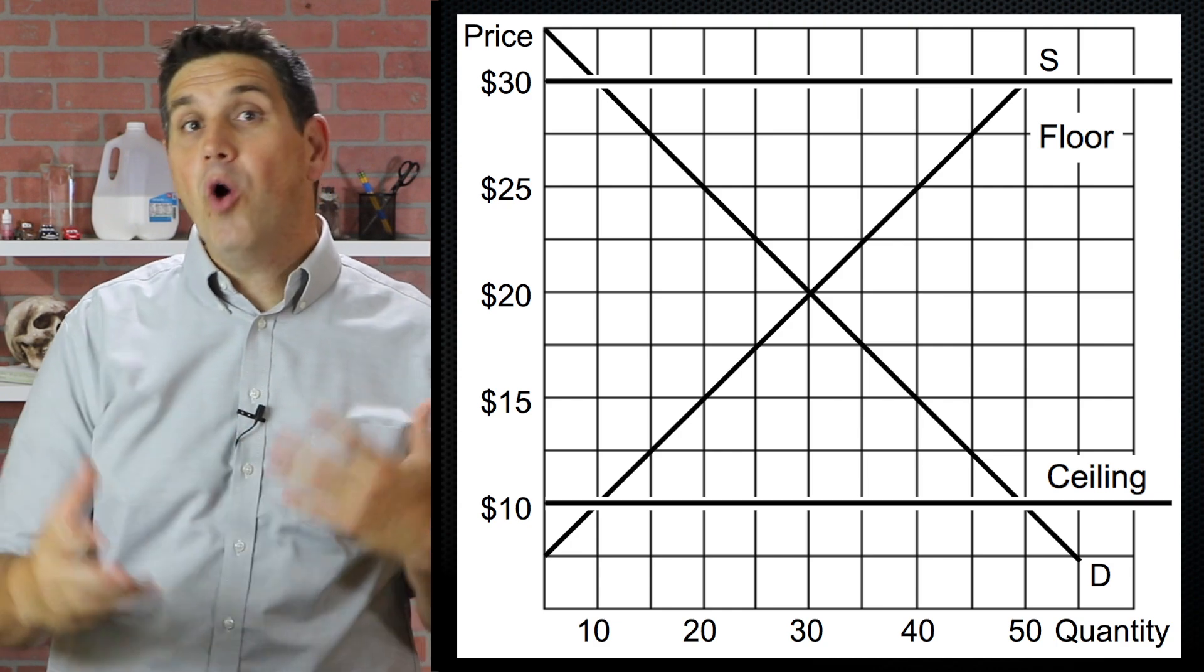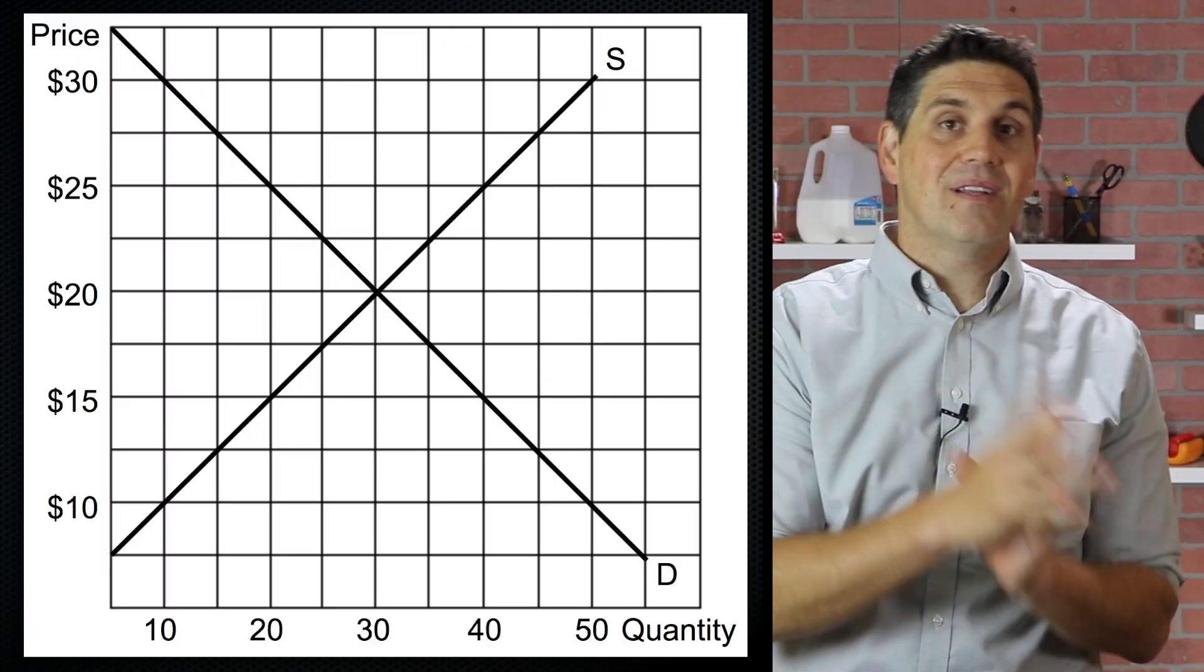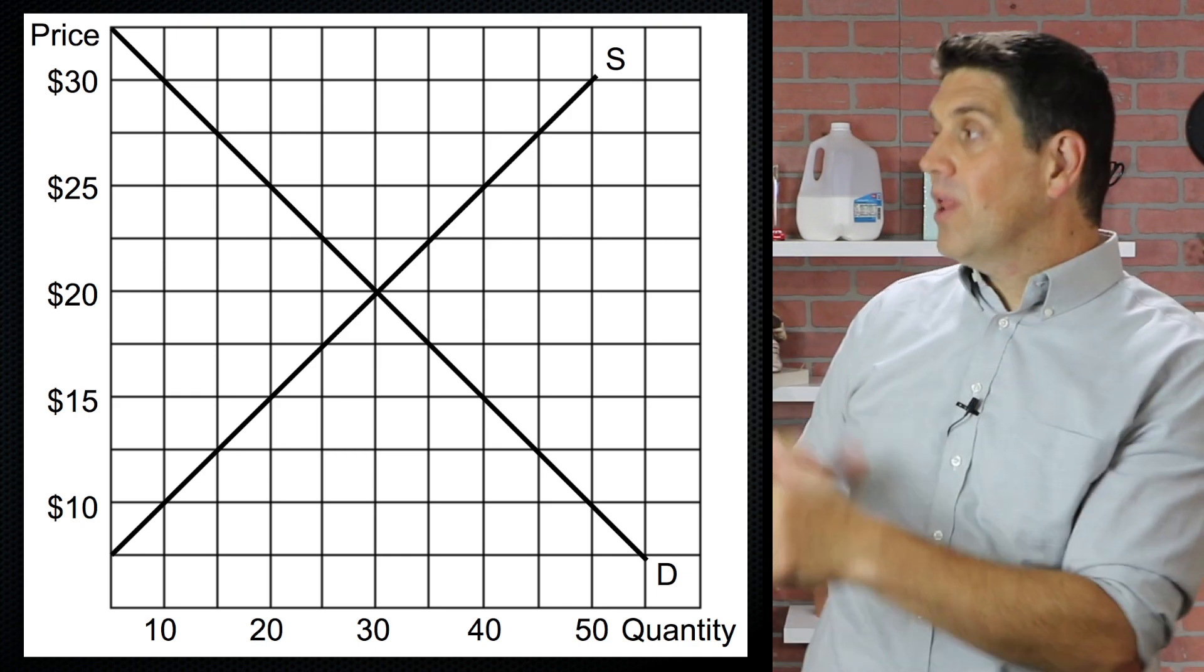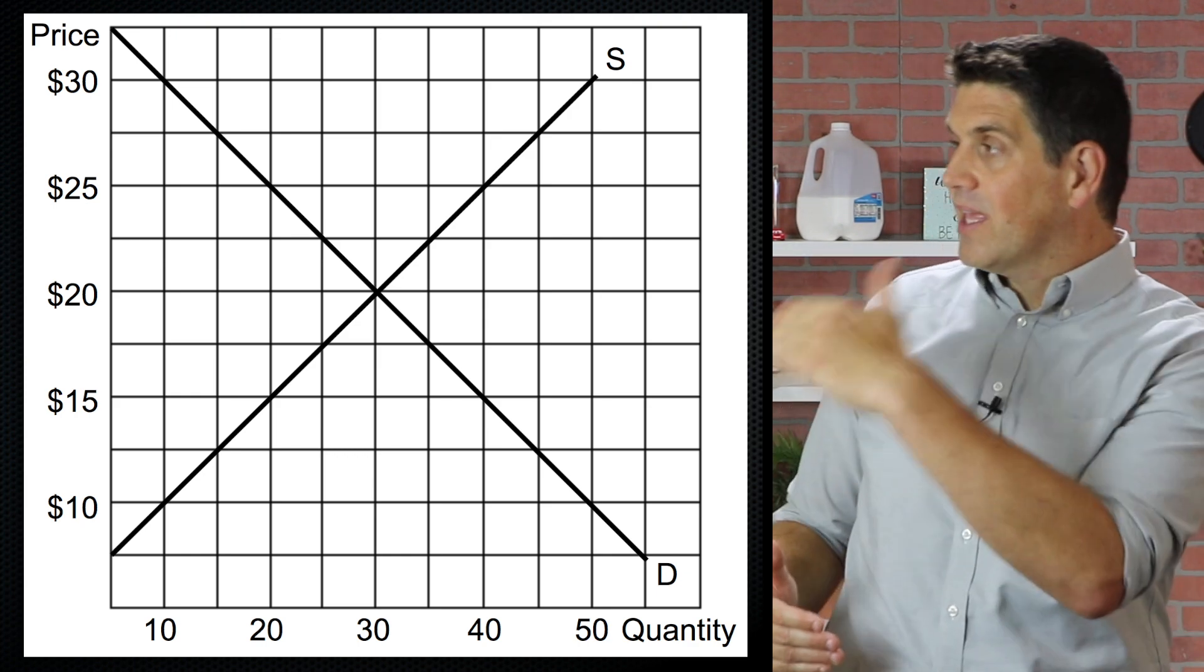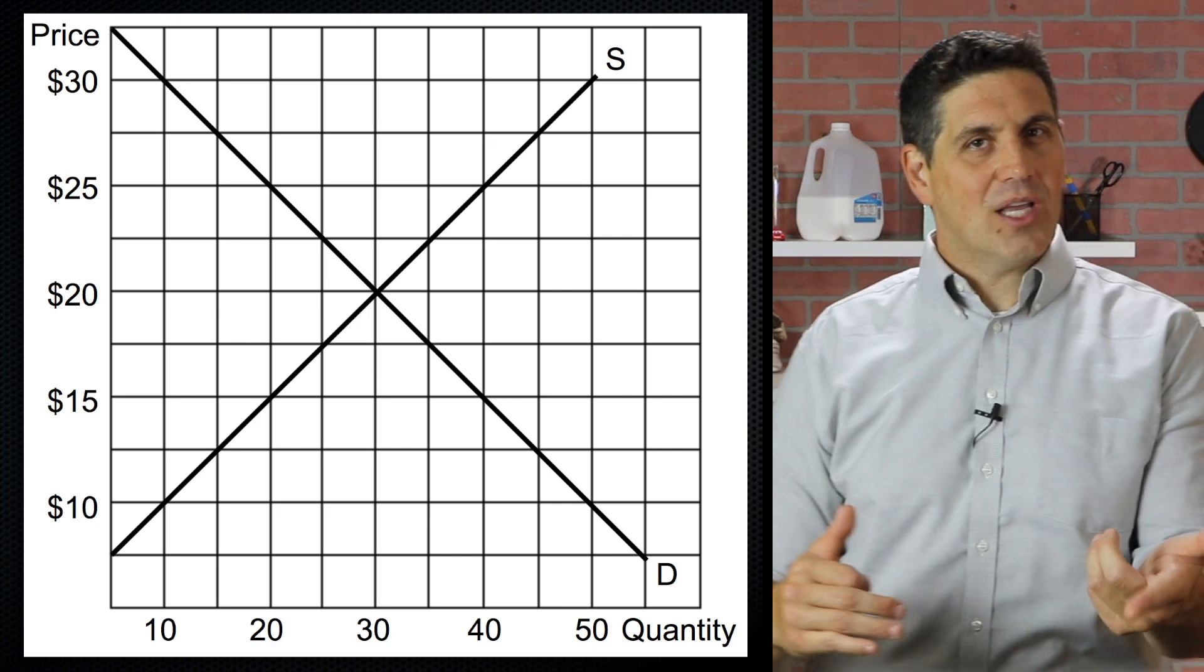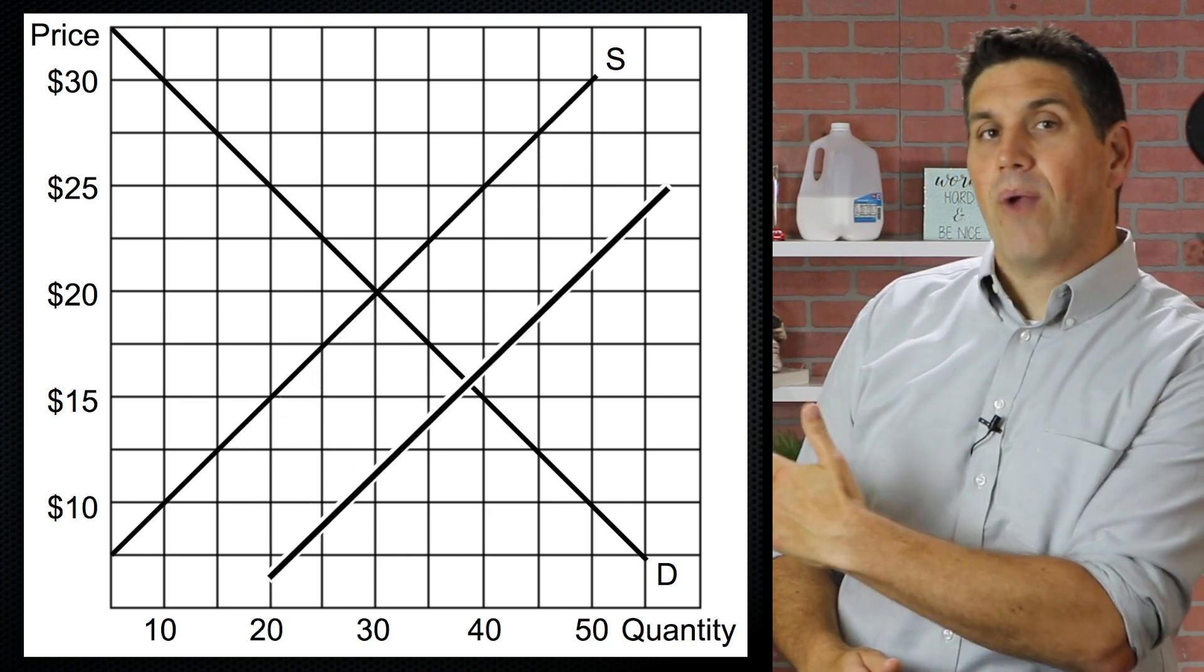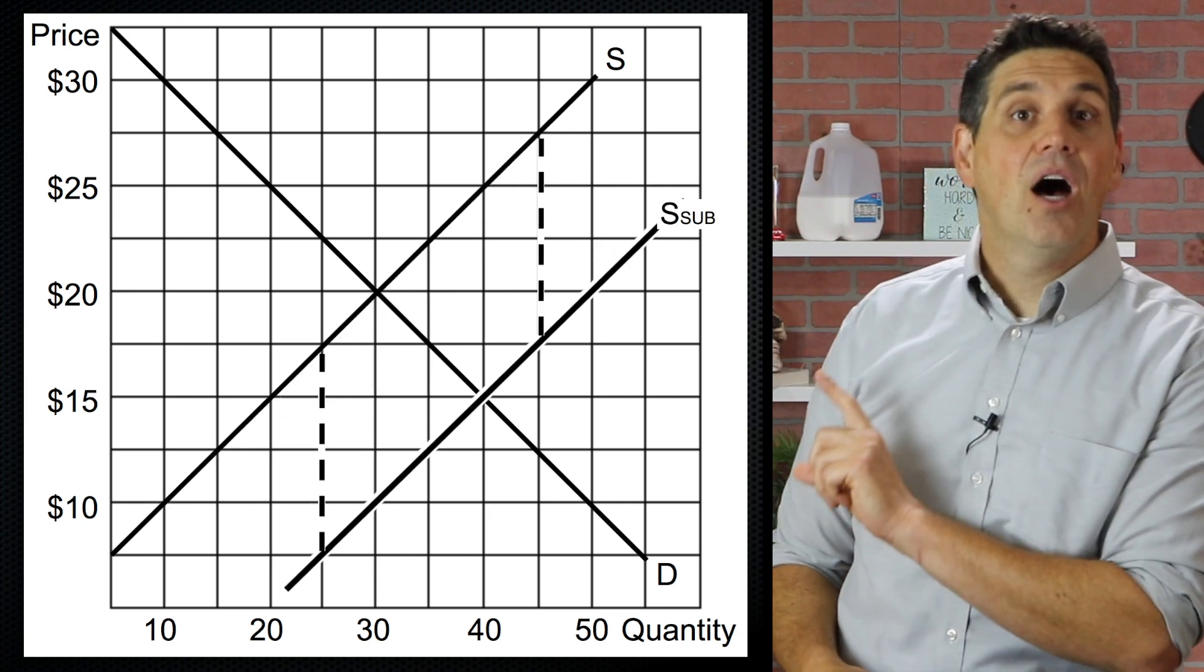Now, policymakers and economists know the problems with price control. So a lot of times they move away from ceilings and floors and instead use subsidies. Let's analyze what's going to happen when the government gives a $10 per chicken subsidy to chicken farmers. So now each chicken can be sold for $10 less than before.